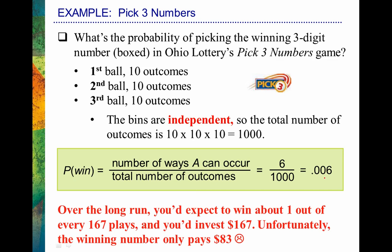So the probability of winning boxed is six ways out of 1,000 different numbers that could come up: 6 divided by 1,000 equals 0.006. Over the long run, you'd expect to win about one out of every 167 plays, investing about $167. But unfortunately the winning number only pays about half that — about $83. So it's a sucker's game. The probability is not with you to win over the long run, and when you do win, you won't recoup your costs over the long run.